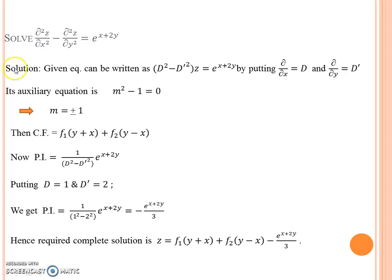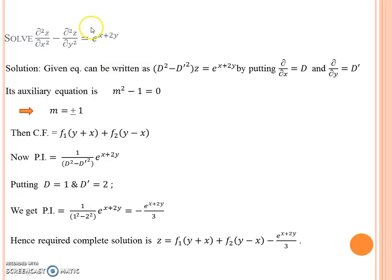Now consider the example: ∂²z/∂x² minus ∂²z/∂y² equal to e^(x + 2y). The right-hand side is non-zero and is of the exponential form e^(ax + by), so we have to find the PI.